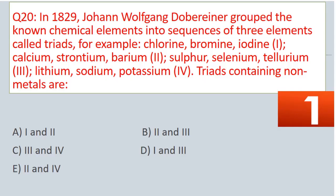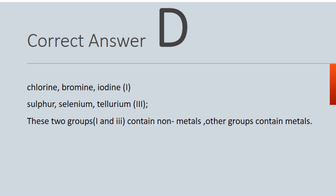Question No. 20. In 1829, Johann Wolfgang Döbereiner grouped the known chemical elements into sequences of three elements called triads. For example: 1. Chlorine, bromine, iodine. 2. Calcium, strontium, barium. 3. Sulfur, selenium, tellurium. 4. Lithium, sodium, potassium. Triads containing non-metals are: A. 1 and 2. B. 2 and 3. C. 3 and 4. D. 1 and 3. E. 2 and 4. The correct answer is D. Chlorine, bromine, iodine (1) and sulfur, selenium, tellurium (3) — these two groups contain non-metals, while the other groups contain metals.